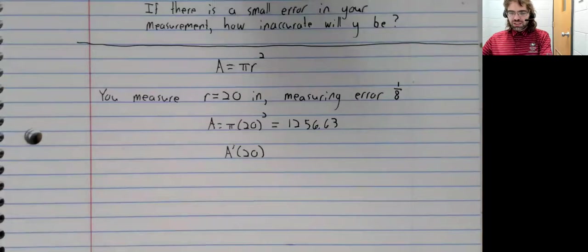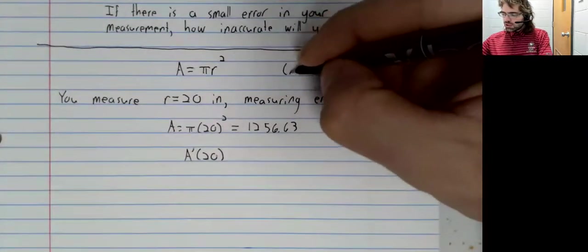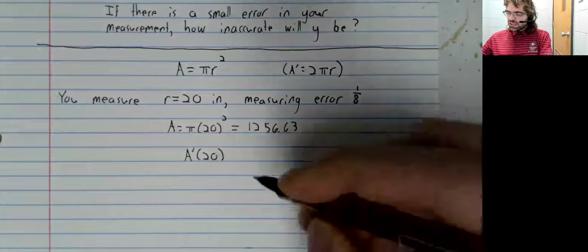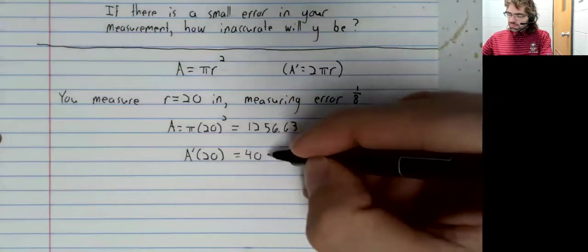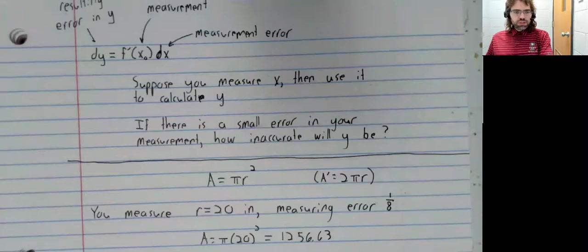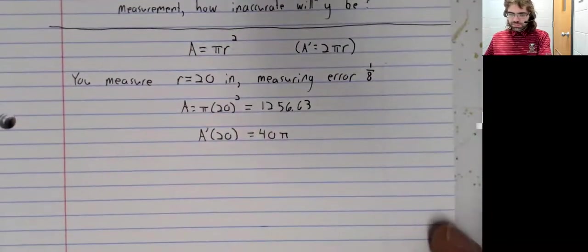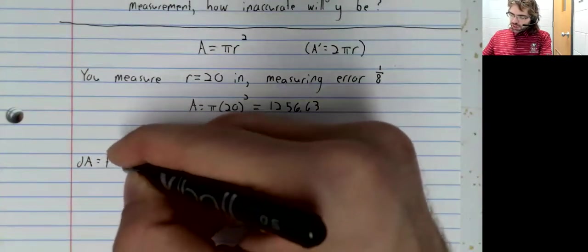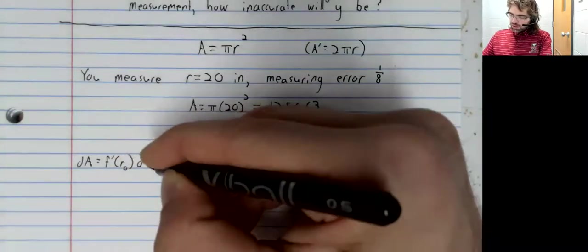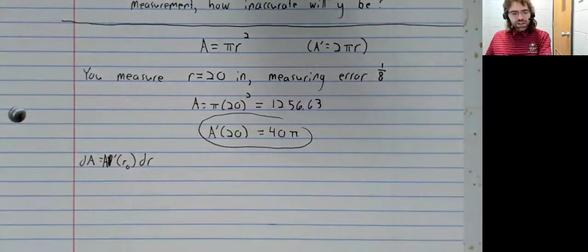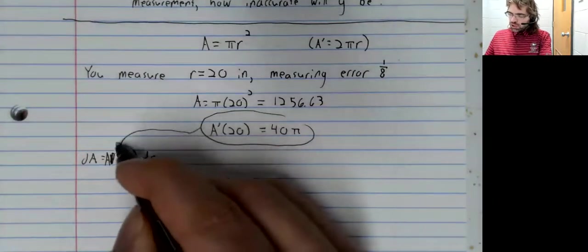A is 2πR, we stick 20 in there, 40π. And the differential equation with R's and A's instead of X's and Y's, is dA equals f prime of R0, dR. A prime of R0, dR, we calculated that.